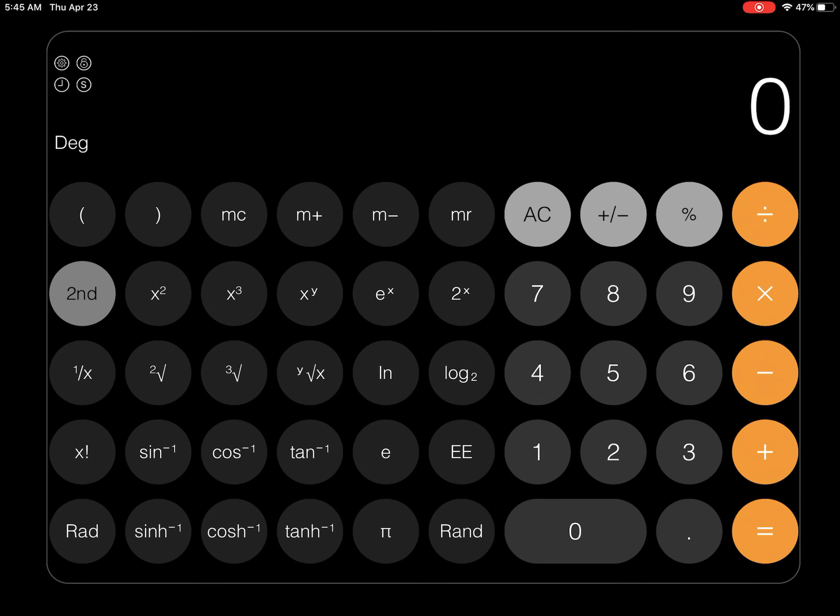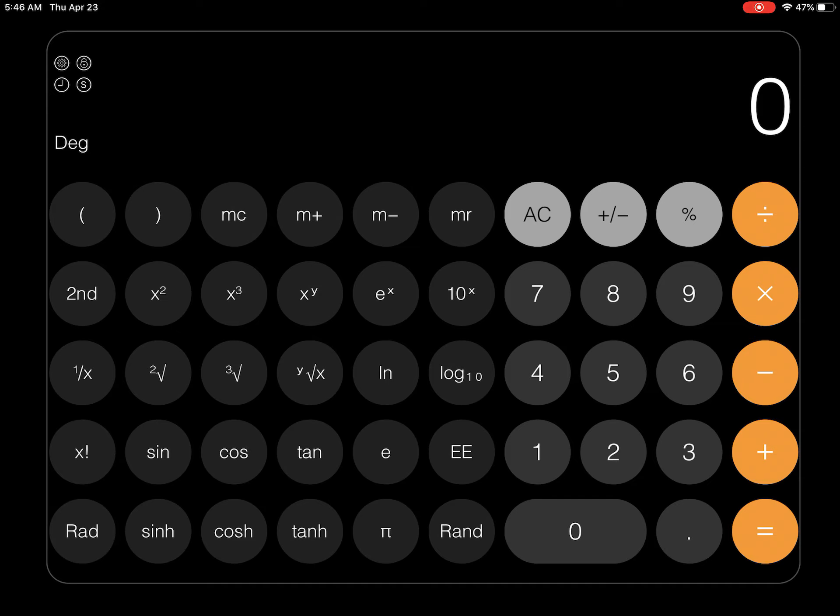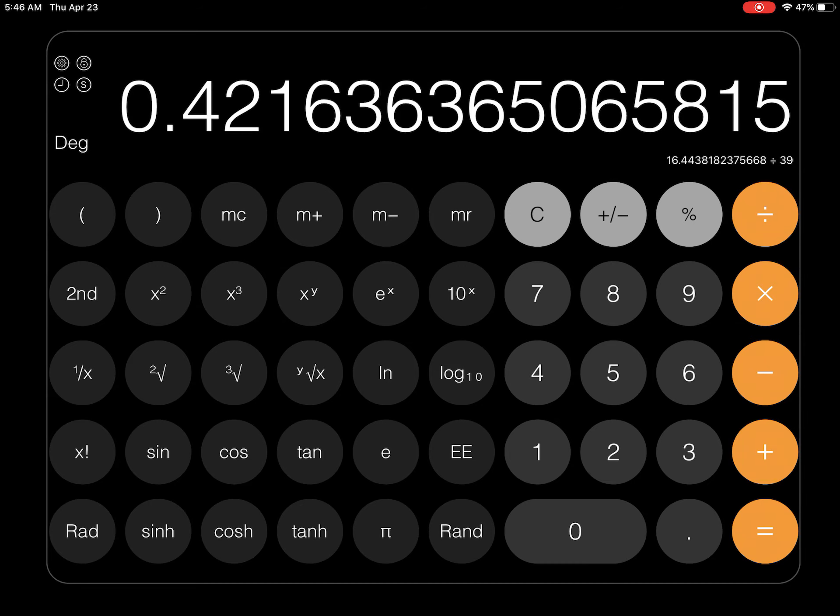Okay, now it's already ready for us to punch into the calculator. So let's go to the other screen, clear it. And we're not in second anymore. Now we actually need the sine function. I'm going to say sin of 114 times 18. That's the top of the fraction. I'm going to divide by the bottom. And I'm going to get 0.42163 blah blah blah going on forever. Okay, so I'm just going to keep the notes all together and write it down.